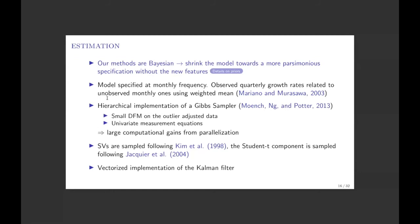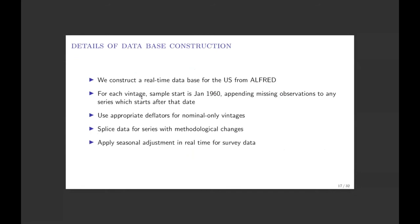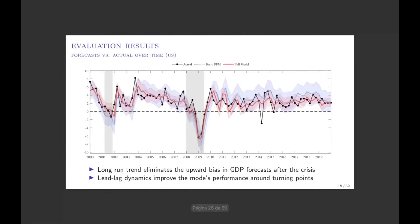Now I'll show selected results. I compare a basic DFM with none of our advocated features versus the full model with all of them. The black dots are the third release of real GDP — our benchmark for truth. We take the third release because the first is typically subject to quite a lot of uncertainty. The blue lines are the forecasts from the basic model and the red from the full model, together with 68% confidence bands, on the day before publication of the first release — typically 25 days after the end of the reference quarter.